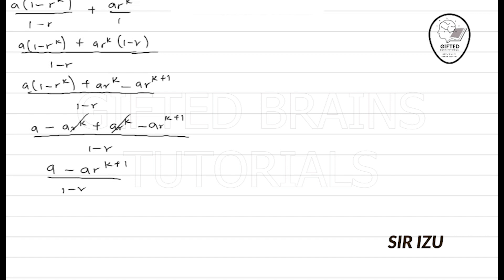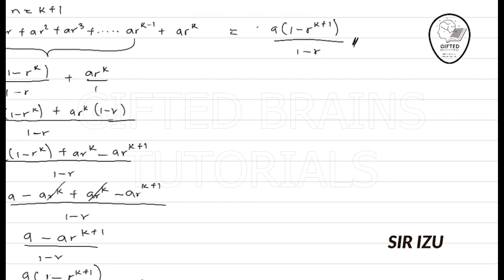So I will be left with A minus AR to the k plus 1 over 1 minus R. So eventually, factorizing A out will give us A into 1 minus R to the k plus 1, then all over 1 minus R. And this is what the left-hand side gave us, and it is the same thing the right-hand side gave us. So we are done proving this.